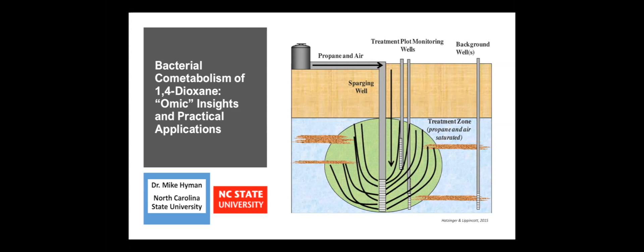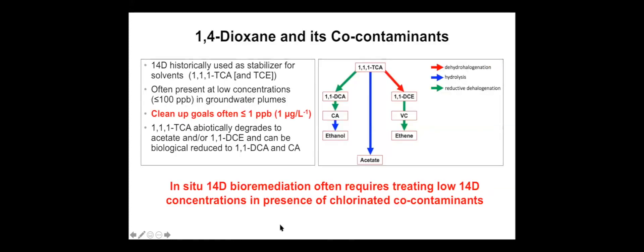The key issues highlighted here: 1,4-dioxane in groundwater environments is often associated with chlorinated solvent co-contaminants, predominantly 1,1-TCA, but as the previous speaker pointed out there's good evidence for TCE as well. Concentrations are typically low, less than 100 parts per billion, and the cleanup goals are also low — roughly one part per billion. So if you're trying to bioremediate 1,4-dioxane, you're treating low concentrations in the presence of chlorinated co-contaminants.